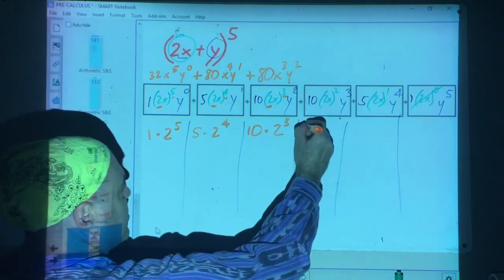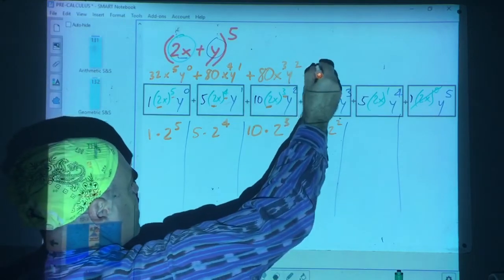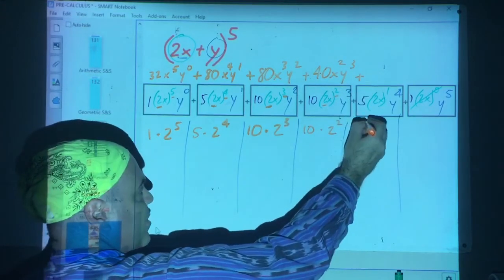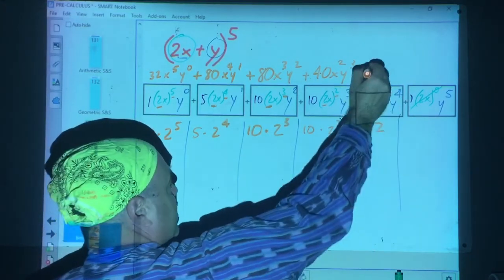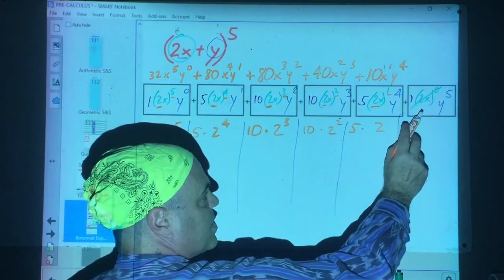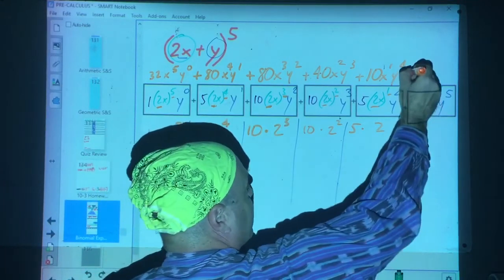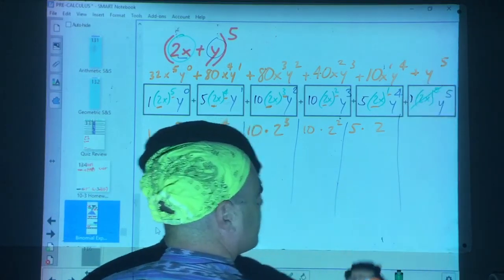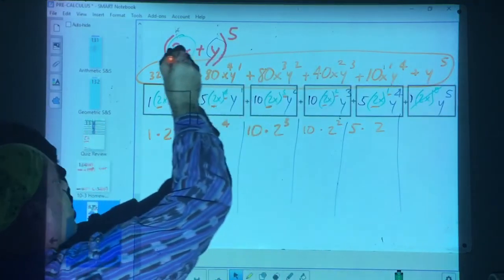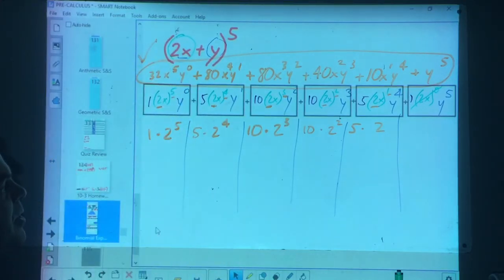Over here. We have 10 times 2 squared, which is 40. Here we have 5 times 2 to the first. That's 10. And finally, we said we crossed out the 2X to the zero. So, we just have 1 Y to the fifth. And this is your answer.